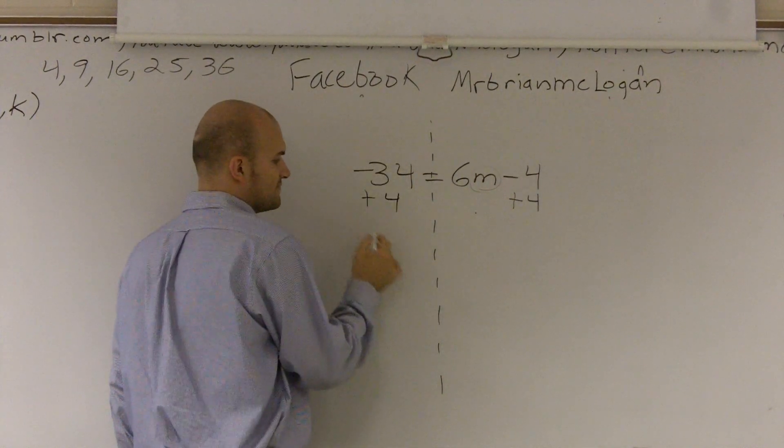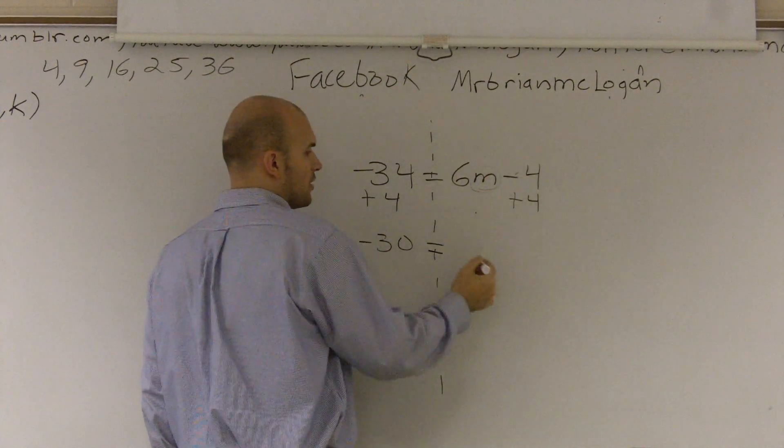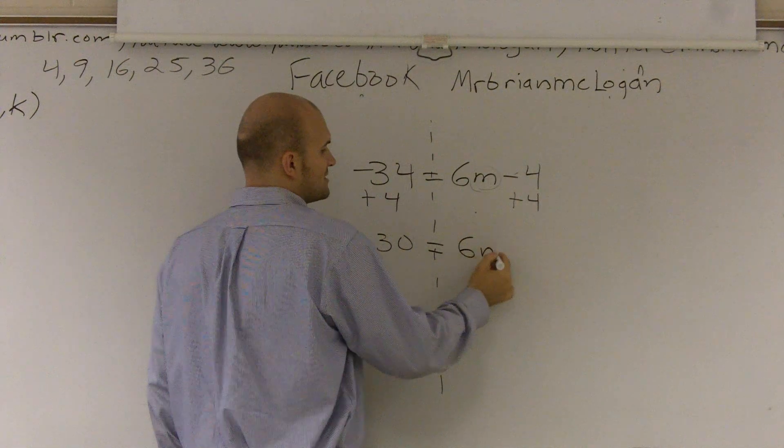Therefore, negative 30 plus 4 gives you a negative 30, equals negative 4 plus 4 is going to give you 0. So you're left with 6m.